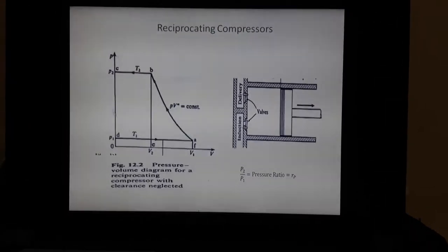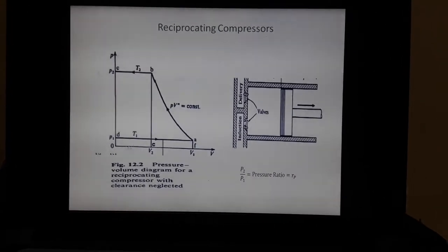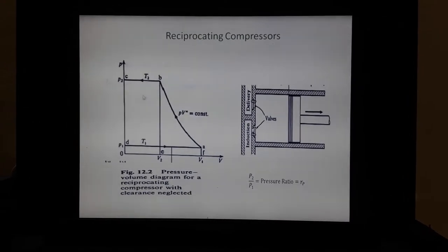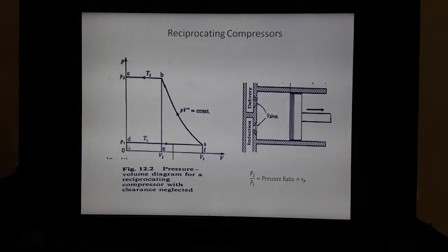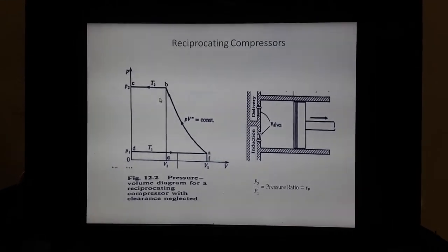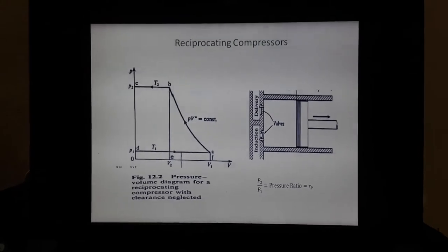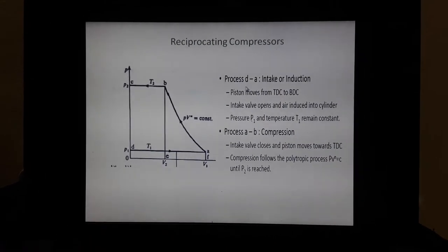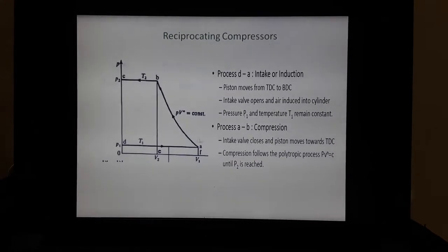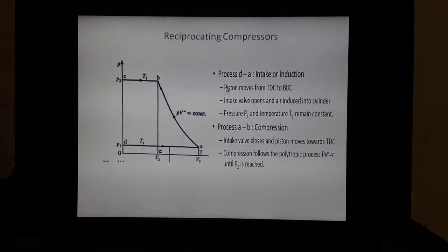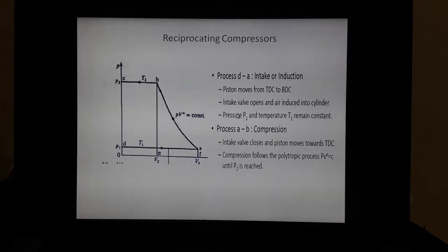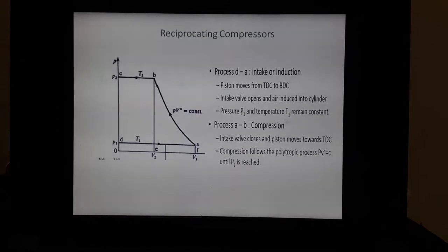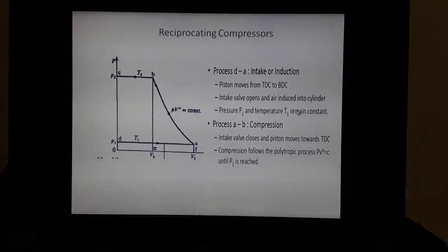This is the PV diagram that we saw yesterday — we will review it briefly. There are three main processes: D to A, A to B, and B to C. Process D to A is the suction process; during this process the piston moves from top dead center to bottom dead center, the intake valve opens, and air is induced into the cylinder. Pressure P1 and temperature T1 remain constant.